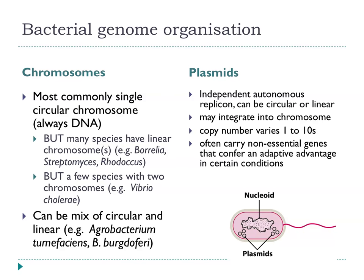Just to remind you again, we have chromosomes in the bacterium and we have plasmids. Chromosomes are usually single and usually circular, but there are exceptions. Some species — Borrelia, Streptomyces, Rhodopolis — have linear chromosomes. A few species have two chromosomes; Vibrio cholerae is perhaps the most notable. You can also get mixtures of circular and linear molecules in the same cell.